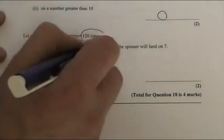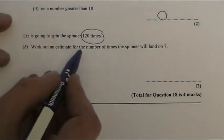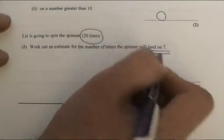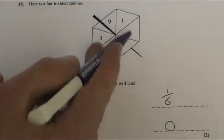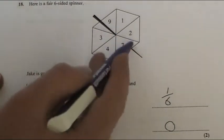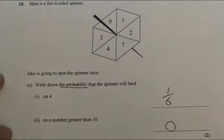We're going to spin it 120 times. Work out an estimate for the number of times it will land on a 7. Now if you go back to your picture, it's going to land on 1 every 6 goes, because there's only a number 7 once.